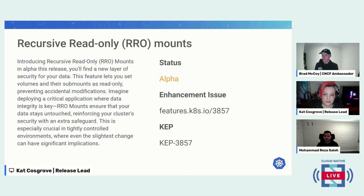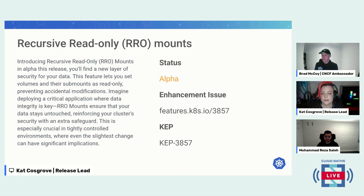The next alpha is recursive read-only mounts. Current read-only volumes are not recursively read-only and may result in compromise of data. This enhancement utilizes runc's RRO bind mount option to make mounts truly read-only bind mounts.